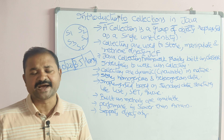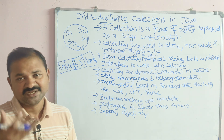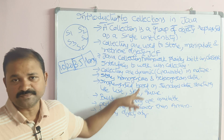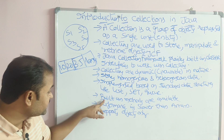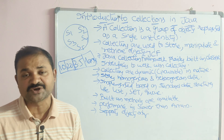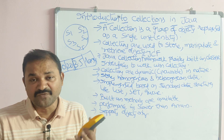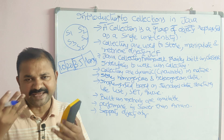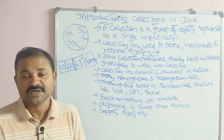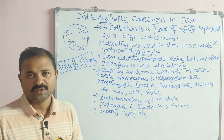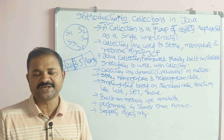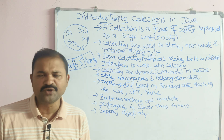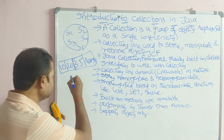We can implement the collection concept based on data structures like List, Set, and Queue. Collections also support built-in methods, so we can perform operations directly without writing code manually. For example, in C, if we want to perform sorting, insertion, deletion, or searching, we have to write the code using loops. But in collections, we simply use a built-in sort method.